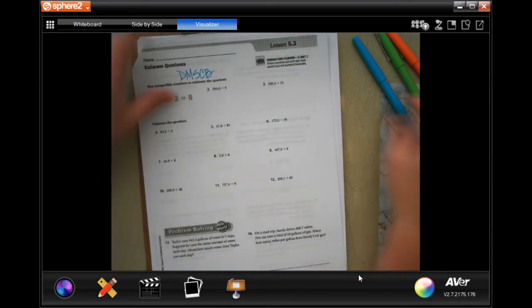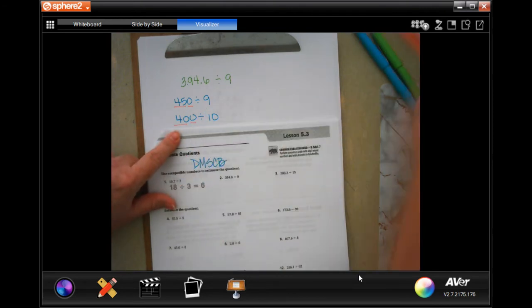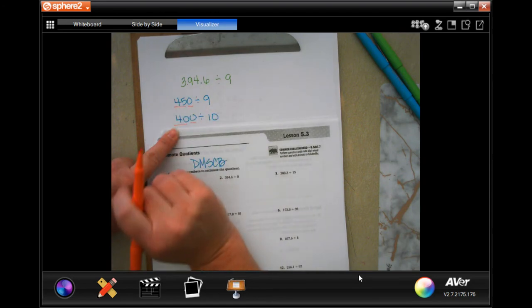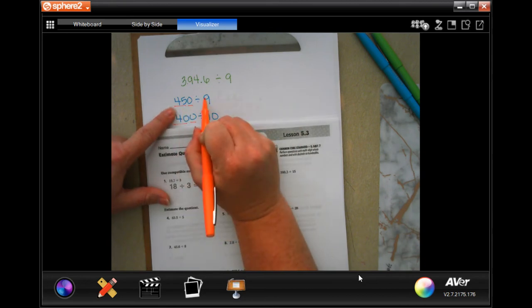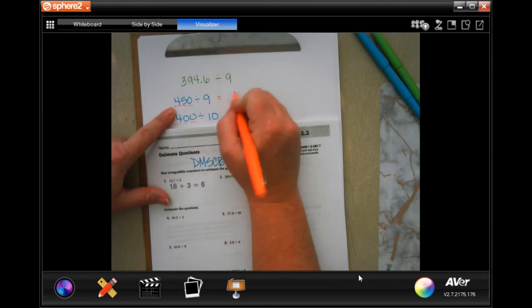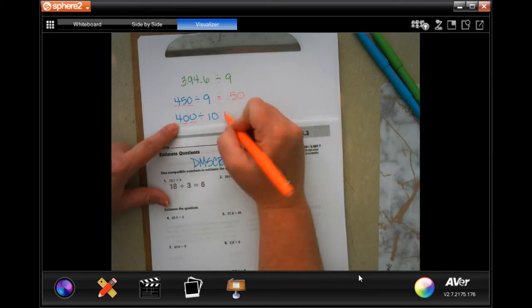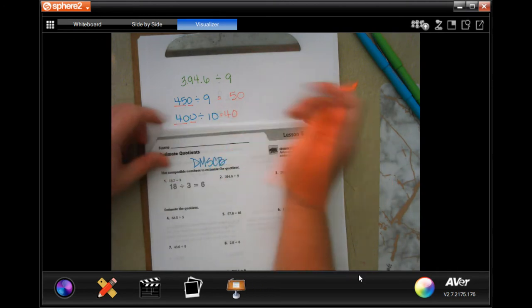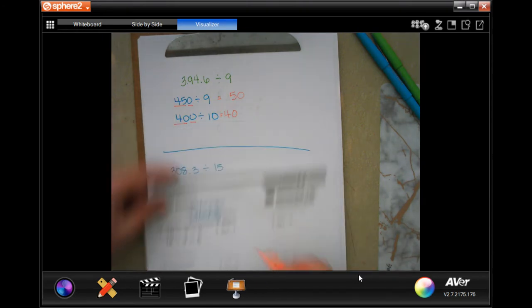So this one, they went with 45. I would have gone with 40. Any reasonable number will be accepted. If they went with 45, 9 goes into 45 five times, and then 9 goes into 0 zero times. 10 would go into 44 times and then I would add that 0. So you can do either one of those for number two.